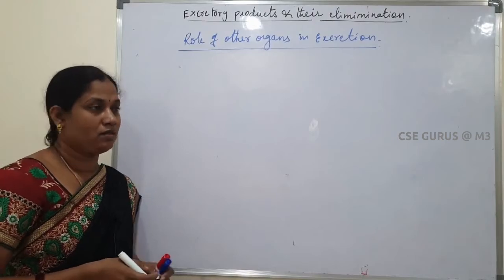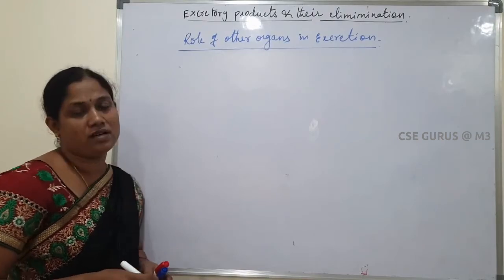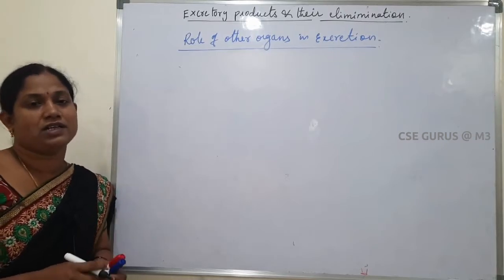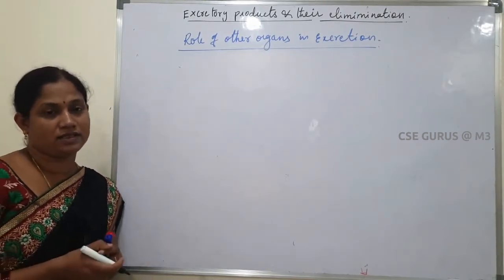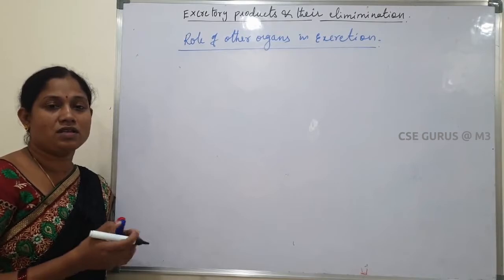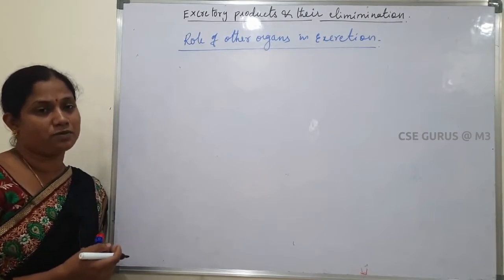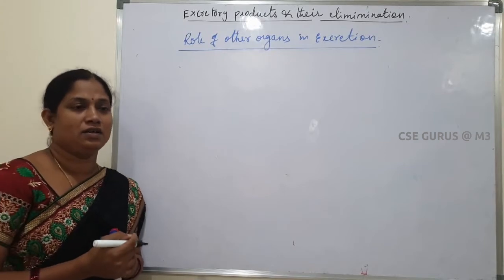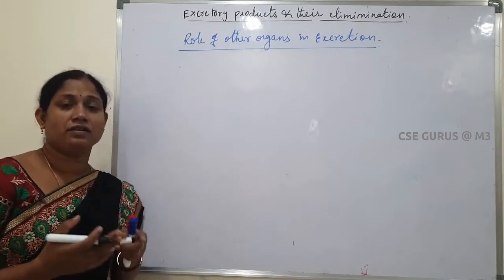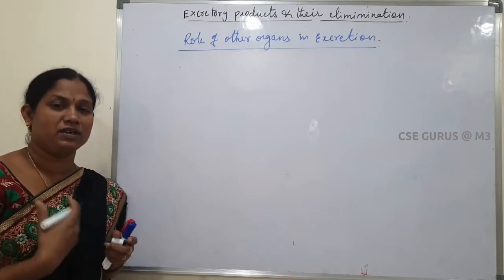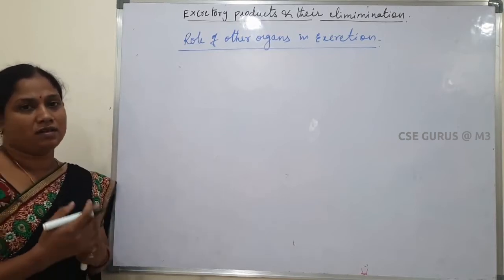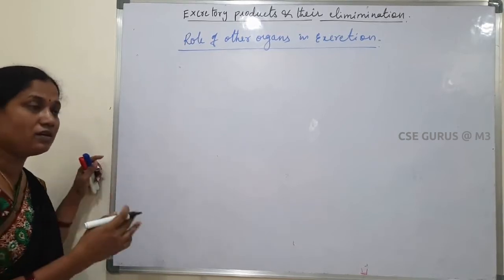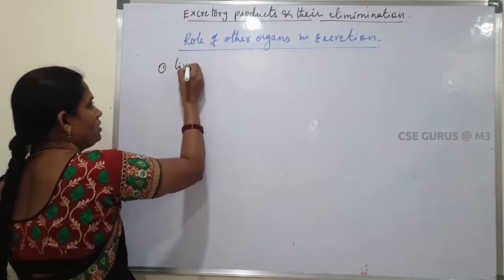Next: the role of other organs in excretion. Normally, the major excretory organs in our body are the kidneys, because they eliminate nitrogenous waste products to the outside. Along with kidneys, some other organs in our body also eliminate certain waste products. Let us discuss what those other organs are.